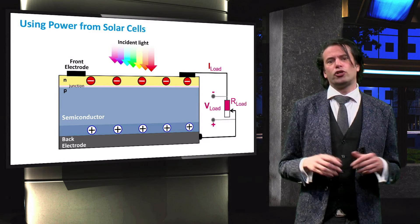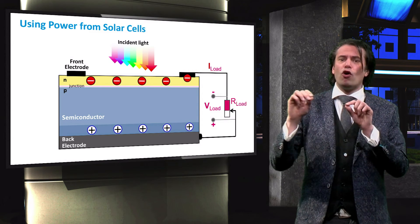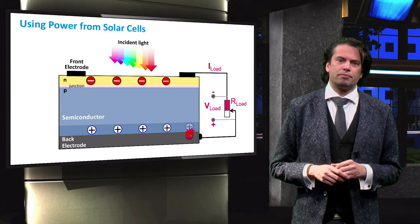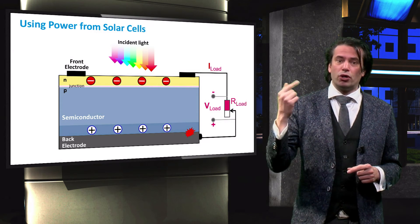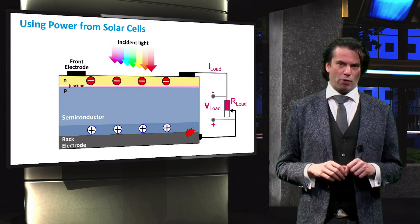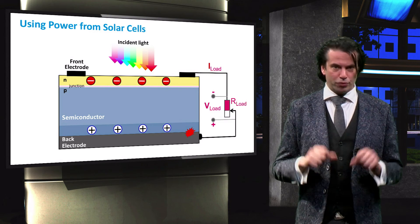If an external circuit is applied between these electrodes, electrons will flow from the N-type materials towards the P-type material. There is now a current flowing from a high potential to a low potential, which is the definition of electrical power. This is how the charge carriers are extracted from the solar cells.